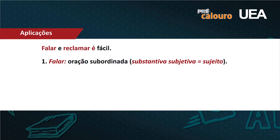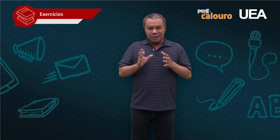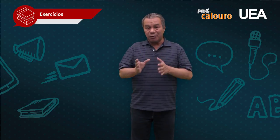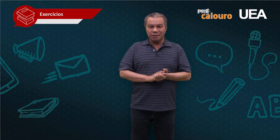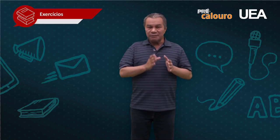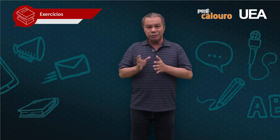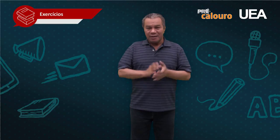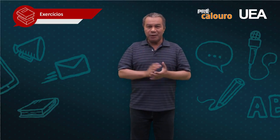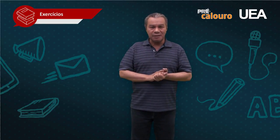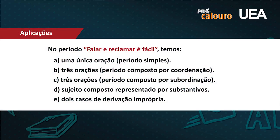Conclusão: temos três verbos — 'falar' no infinitivo, 'reclamar' no infinitivo e o verbo 'ser' no presente do indicativo. Se temos três verbos, são três orações. As duas primeiras fazem papel de sujeito do verbo 'ser'. Se tenho orações fazendo papel de sujeito, qual é o processo? Automaticamente de subordinação. Conclusão: três orações, período composto por subordinação — é a letra C.